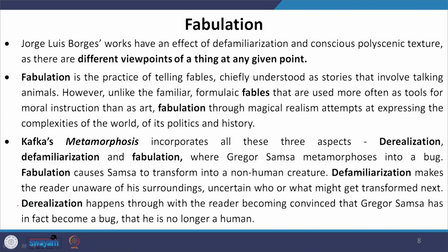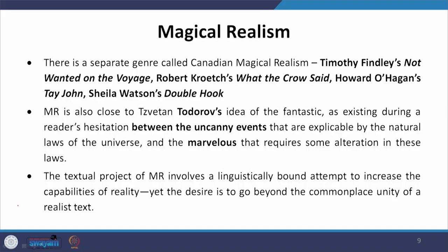If we look at Kafka's Metamorphosis, it incorporates all three aspects — derealization, defamiliarization, and fabulation — where Gregor Samsa metamorphoses into an insect, into a bug. Fabulation causes Samsa to transform into a non-human creature. Defamiliarization makes the reader unaware of his surroundings and uncertain of who or what might get transformed the next moment. And with derealization, the reader becomes convinced that Gregor Samsa has in fact become a bug and that he is no longer a human.